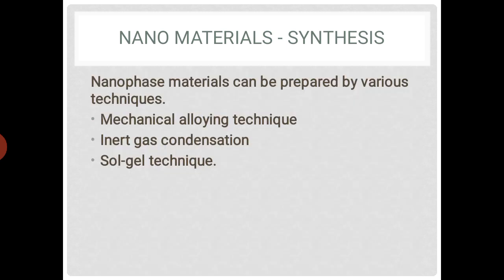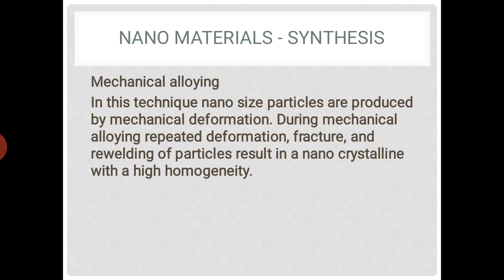They can be prepared using various techniques, some of which are mechanical alloying, inert gas condensation, and sol-gel technique. In the mechanical alloying technique, nano-size particles are produced by mechanical deformation. During mechanical alloying, repeated deformation, fracture, and rewelding of particles take place, resulting in nanocrystalline material with high homogeneity.